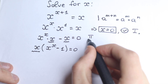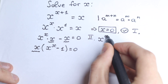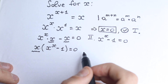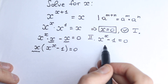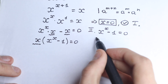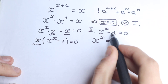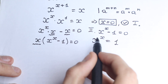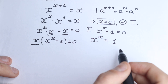The second case: this parenthesis equals zero — x to the power x minus 1 equals zero. To solve this, bring x to the power x to the left and bring the one to the right hand side: x to the power x equals one. Let's try to solve this equation.